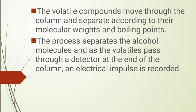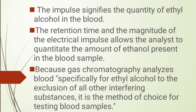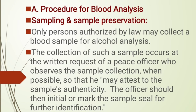The components separate in the GC according to their molecular weight and boiling points. As the volatiles pass through a detector at the end of the column, an electrical impulse is recorded and a spectrum is obtained. The retention time and magnitude of the electrical impulse allow the analyst to quantitate the amount of ethanol present in the blood sample. Because gas chromatography analyzes blood specifically for ethyl alcohol, it is the method of choice.